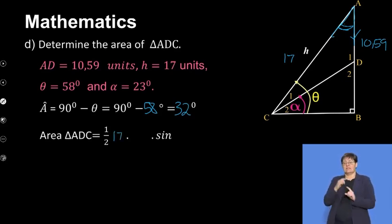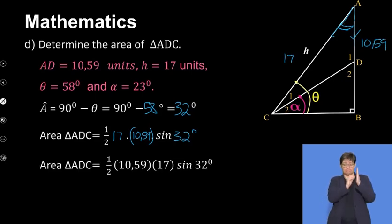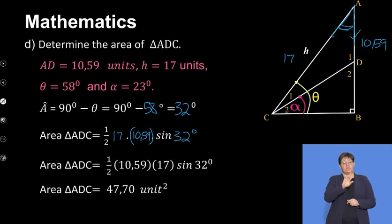Putting that into our calculator, we're going to end up with area of ADC to be 47.70 square units. This question was just substituting into whatever we found earlier. It should have been pretty simple there.